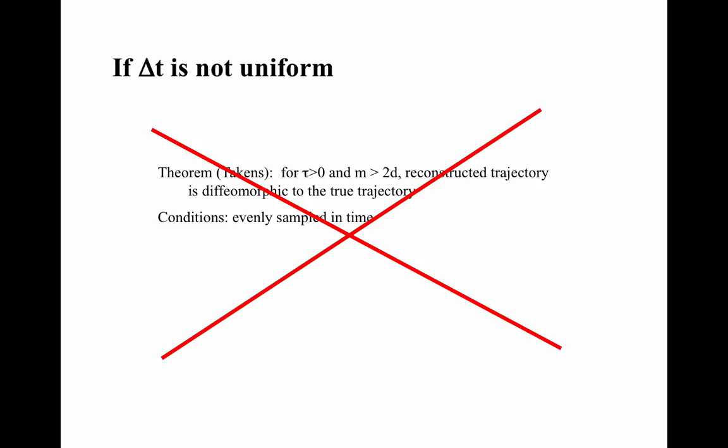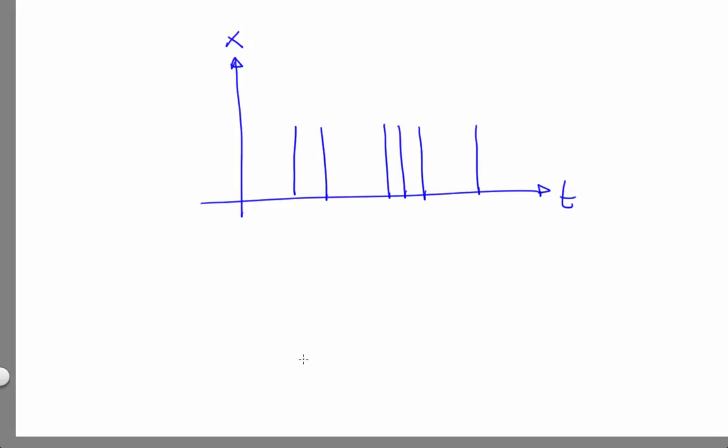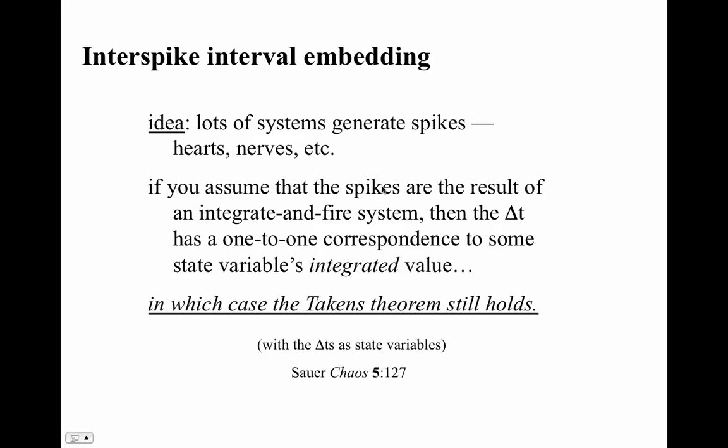The requirement that data be evenly sampled in time is often a problem in practice — for example, if the data acquisition system doesn't have a perfect time base — and that makes the theorems go away. Workarounds include upsampling or interpolating, where you're making up points, but you have to watch out because the dynamics becomes a mix of the real dynamics and your interpolation, which can really alter the dynamical invariance. There's also fuzzy delay coordinate embedding. An elegant workaround for uneven sampling exists when data come in the form of spikes, as in neurons — it's mathematically valid to embed the intervals between the spikes.